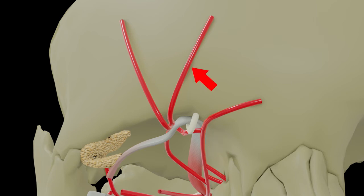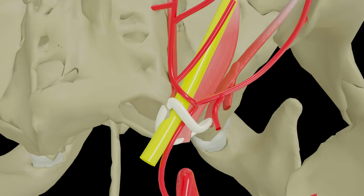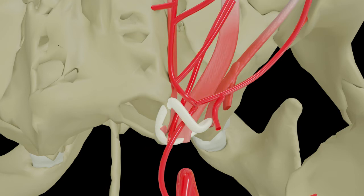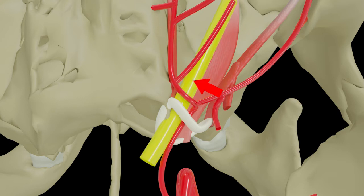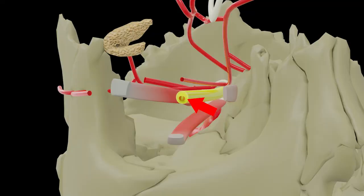The ophthalmic artery terminates near the medial angle of the eye by dividing into supratrochlear and dorsal nasal branches. The first major branch is the central artery of the retina, which enters the substance of the optic nerve and runs through it to supply the retina. It is an end artery — the clinical significance of which will be discussed shortly.